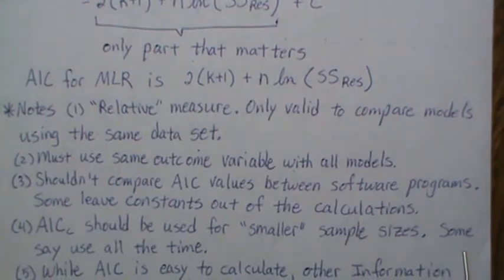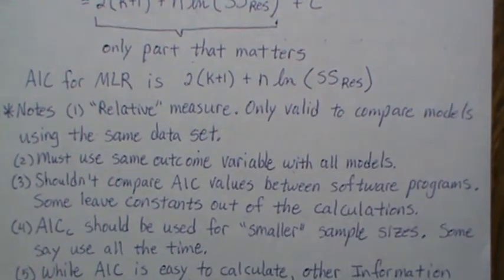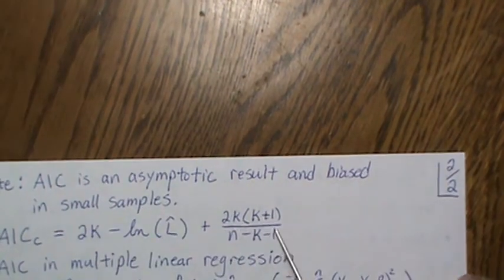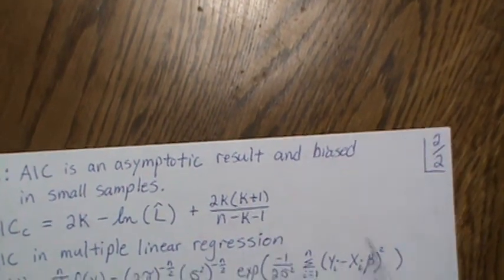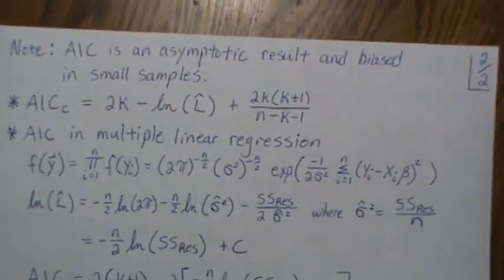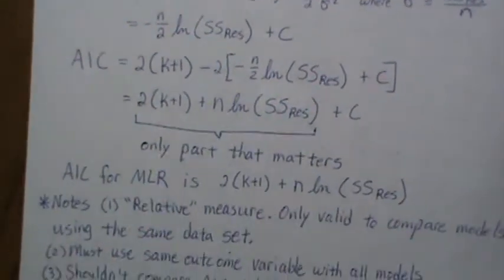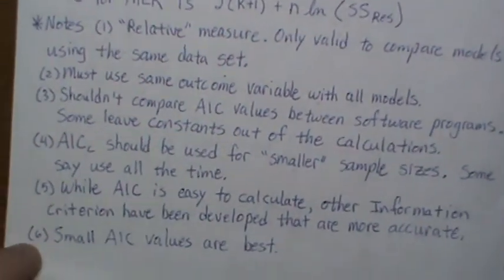The AIC corrected should be used for smaller sample sizes. Some say you should just use it all the time because asymptotically this goes to zero and they're asymptotically equivalent, but there's pros and cons with that.